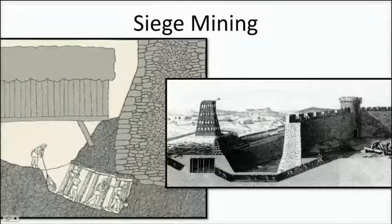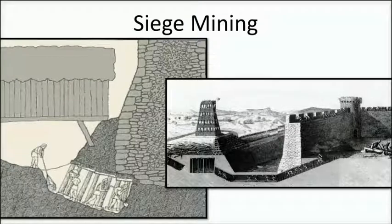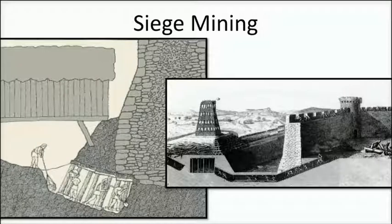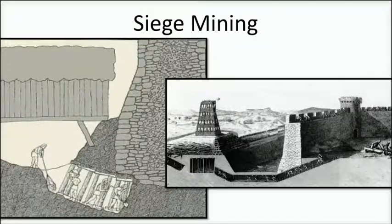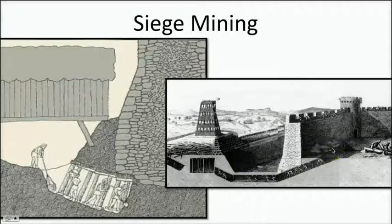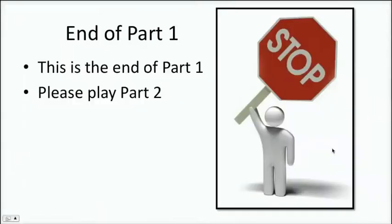Siege mining was an interesting technique, because if you can't go over the wall, you might as well try going under it. It was a very time-heavy endeavor — you would need to dig and dig and dig, and you never knew if your tunnel was going to collapse. But if you couldn't go over the wall, you could try to sneak attack the enemy by going under it, and that did happen once in a while. That's going to end part one. When we come back, we're going to look at siege warfare on the defensive side, then briefly cover knights and naval warfare, and then talk about why medieval warfare ends. Go ahead and hit stop and queue up part two.